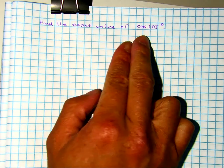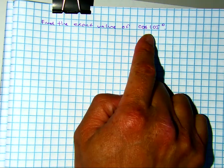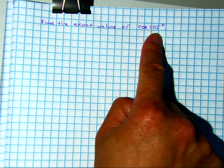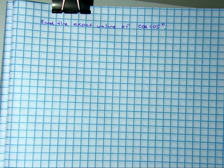Find the exact value of cosine 105 degrees. Class, yes or no? Is 105 degrees on your unit circle? The answer is no.